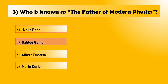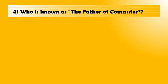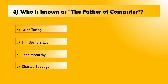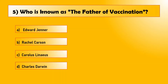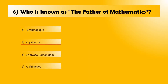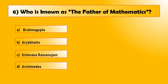The right answer is option B, Galileo Galilei. Question number four: who is known as the father of computer? Answer D, Charles Babbage. Question five: who is known as the father of vaccination? Option A, Edward Jenner.